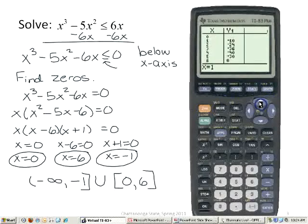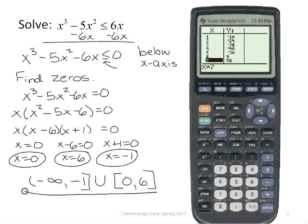If we go to a table, we can see, if we just scroll through our table and look at x values between 0 and 6, we get negative y's. But then once we get up past 6, we get positive y's. So this in fact is our solution.